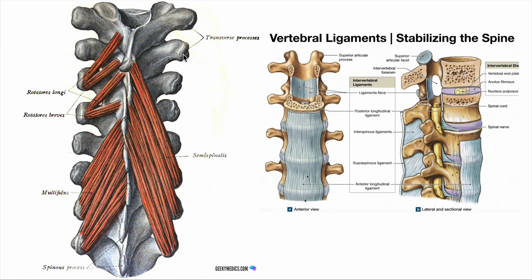Each vertebra has a degree of forward, backward, left and right bend, and rotational movement with its neighbors above and below. It's when they all start moving together that they enable the whole spine to move as it does, and these little muscles control them. My next video will talk about the much bigger muscles involved down our backs in a wider context.